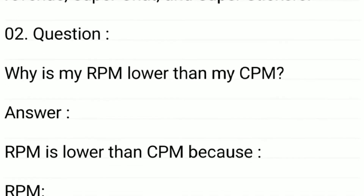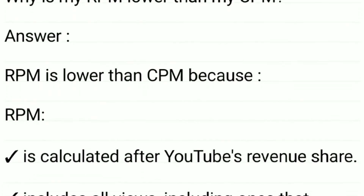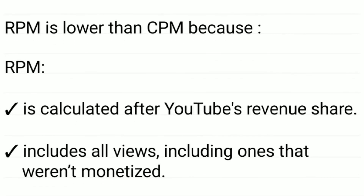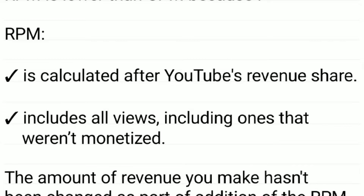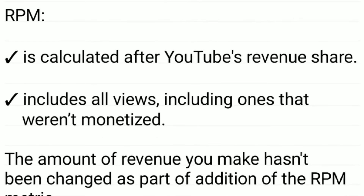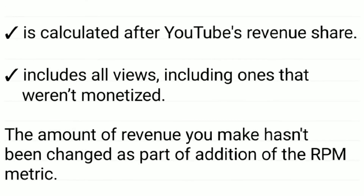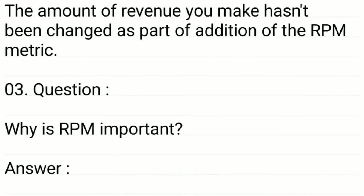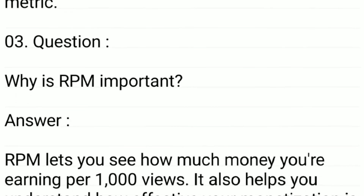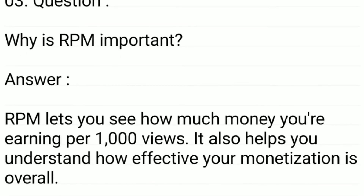Why is my RPM lower than my CPM? RPM is lower than CPM because RPM is calculated after YouTube's revenue share. RPM also includes all views, including ones that were not monetized. The amount of revenue you make has not been changed as part of the addition of the RPM metric.